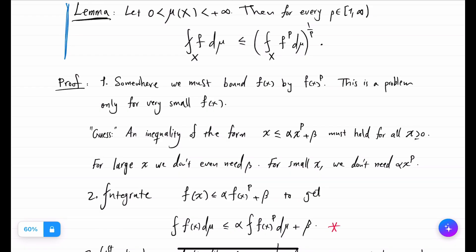So the first observation again is that somewhere we have to compare f(x) to f(x) to the p. We cannot make x smaller than x to the p even if we help it with any number. That will fail for a small x.